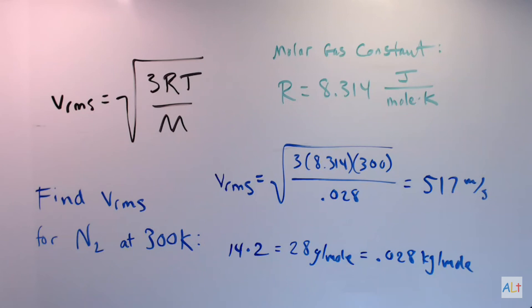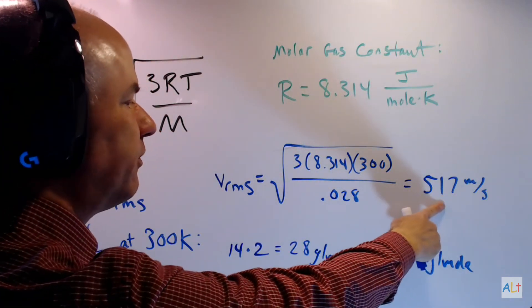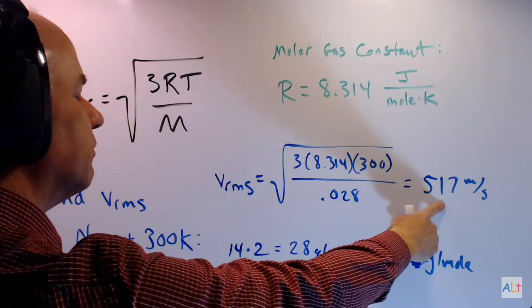That's a little faster than the speed of sound in air. And that makes sense because air is mostly made of nitrogen. If you mistakenly put in 28, you get a much smaller number, much less than the speed of sound. And that doesn't make any sense at all.